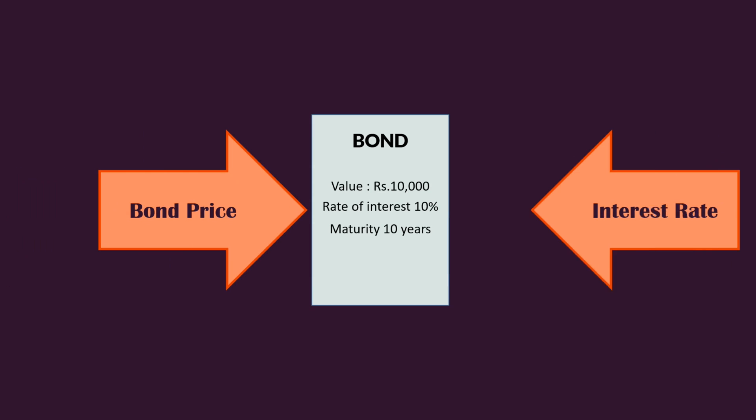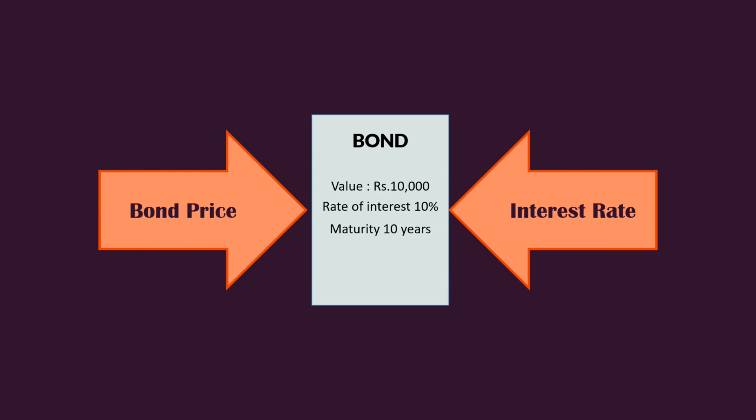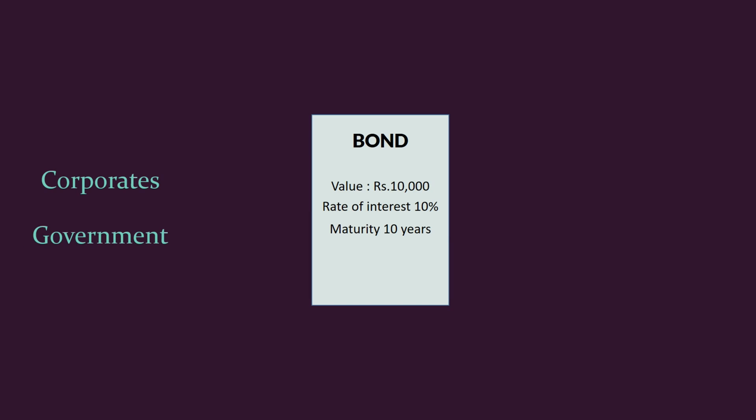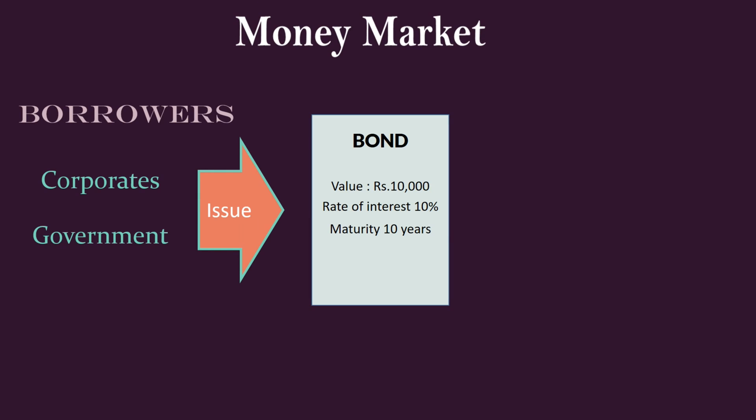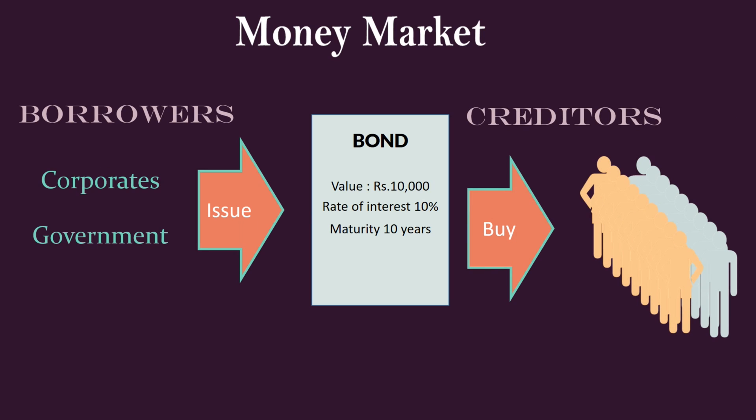A basic understanding about bond price and interest rate is very much essential before we start a discussion on Liquidity Preference Theory of Interest. A bond is a credit instrument. Corporates and government use this to raise funds — in other words, borrow money in the money market. The issuer of the bond is the borrower and the purchaser of the bond is the creditor. We shall try to understand the functioning of the money market with the help of an oversimplified hypothetical example using the bond trade.